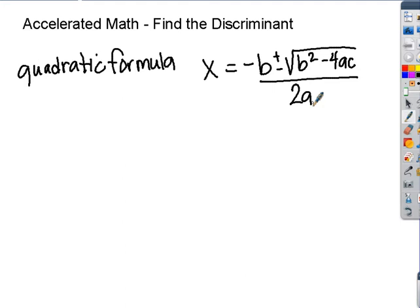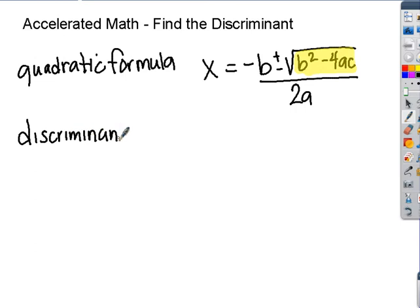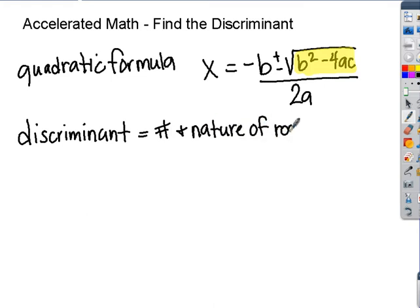Now the discriminant is actually just this little inside part there. That is going to tell you the nature and number of your roots. So just a little quick definition — the number and nature of your roots. And roots is like another word for solutions.